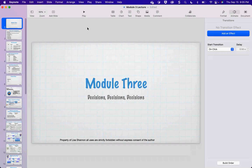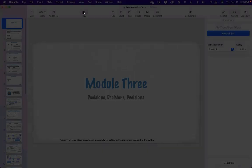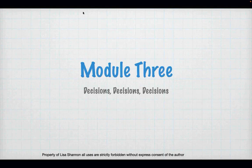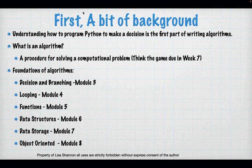We're going to start tonight by talking about decisions. That is what branching is all about in Python, and in any language. When you're talking about branching, you are talking about the need to make a decision. As humans, decisions come somewhat easily. We understand the English language, how to ask a question. That's all going to change tonight.